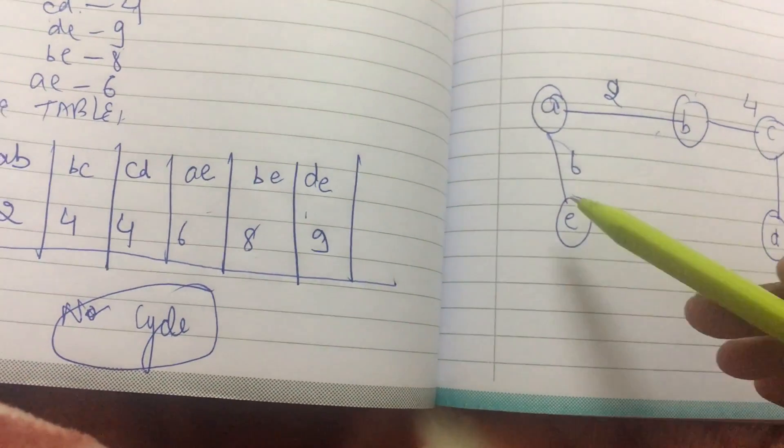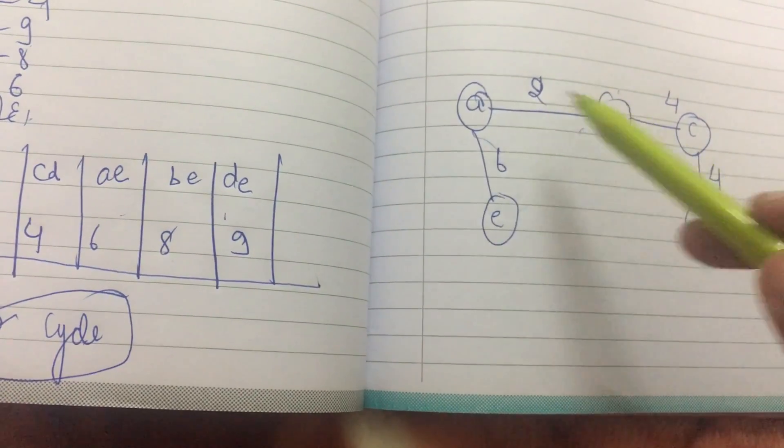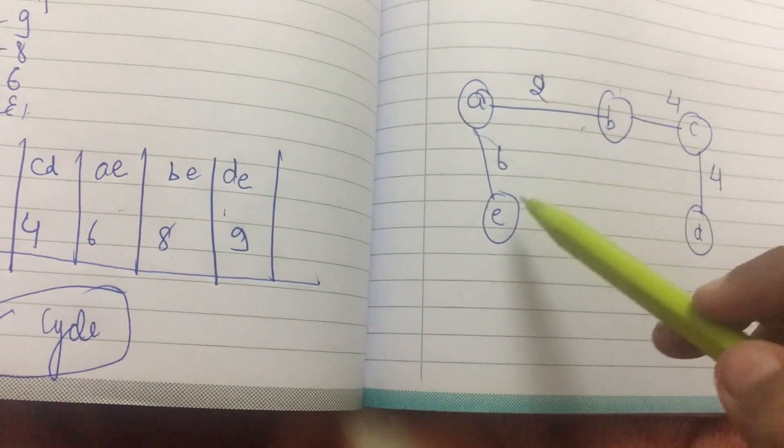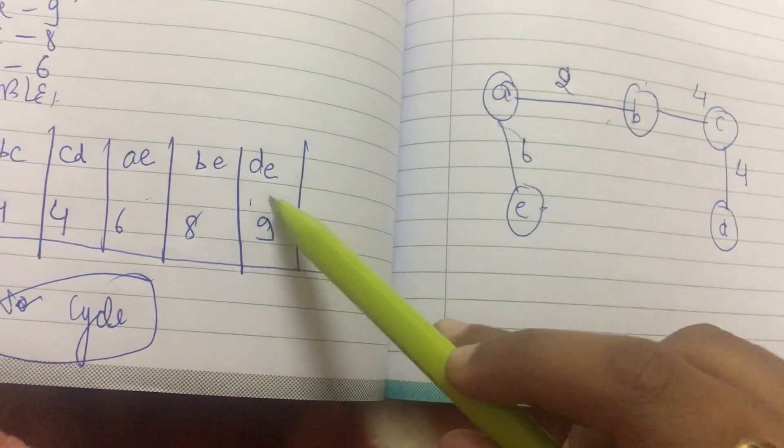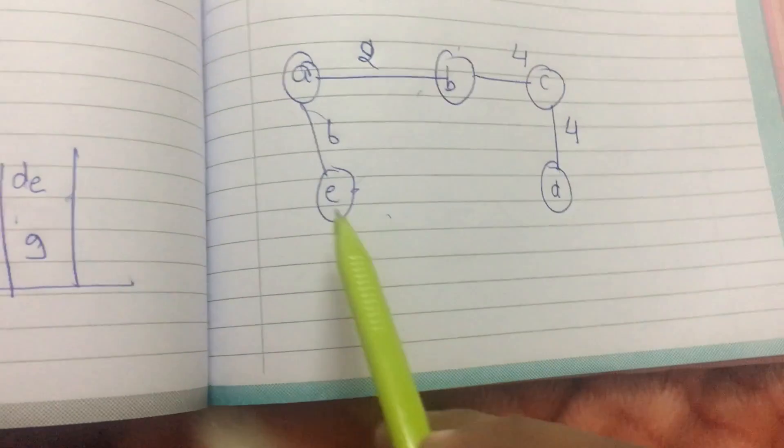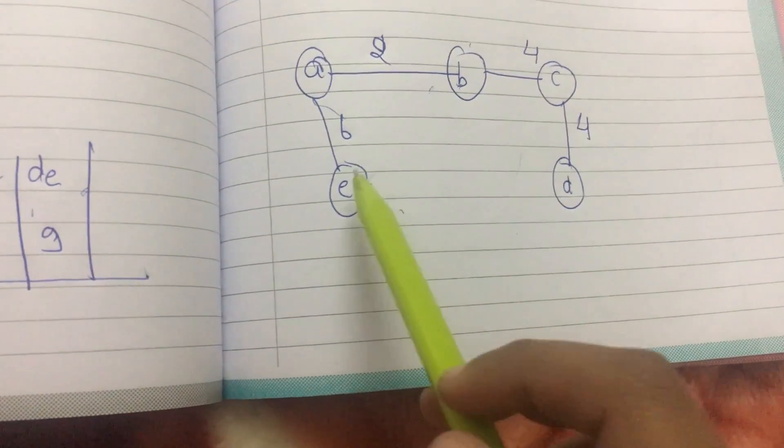Now B goes to E. If I make an edge over here there will be a formation of a cycle, so I will not include this. And moreover, B and E have already been traversed. D and E, if I make an edge between them it will again lead to a cycle, so I do not include this.